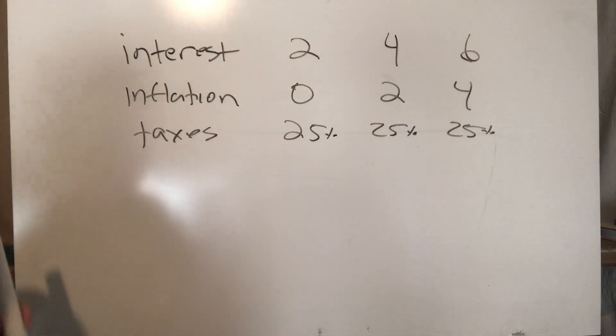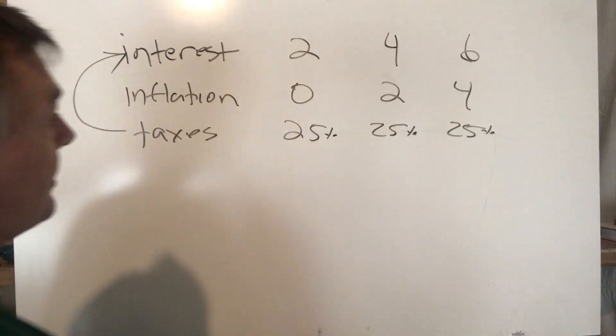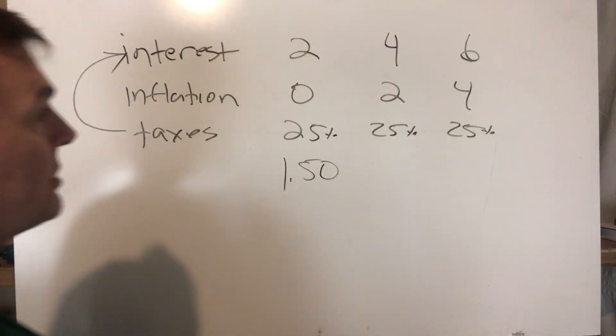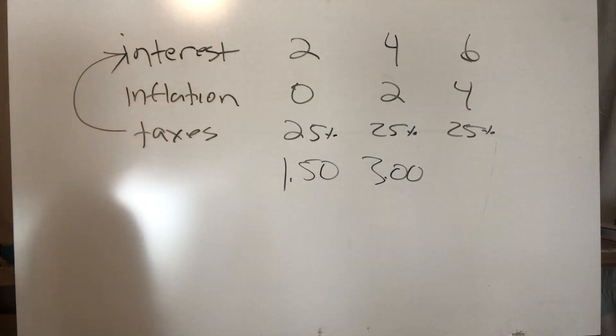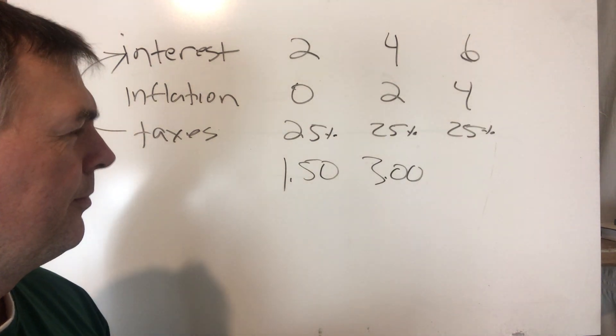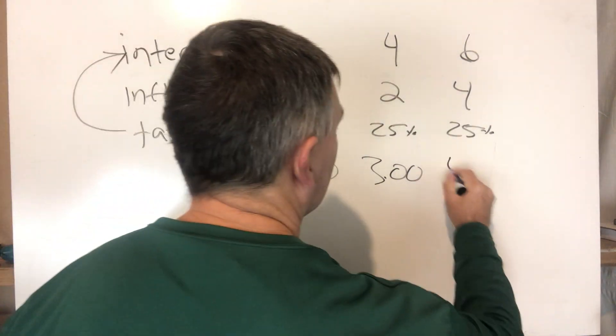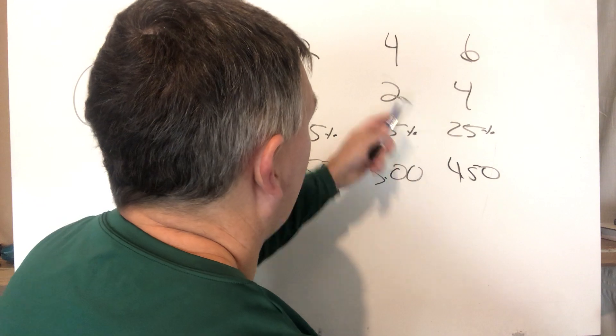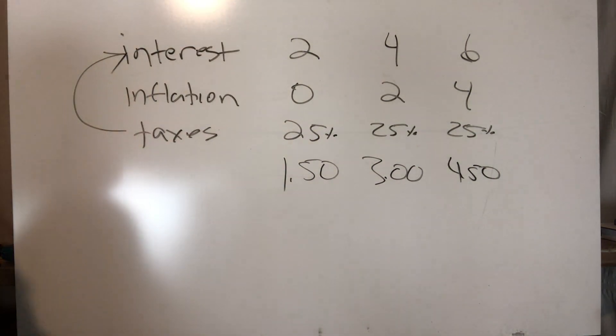What happens is you don't pay taxes on the net; you pay taxes on the gross. So here you've got 25% of 2, which is 1.5. Here you've got 25% of 4, which is 3. Here you've got 25% of 6—let me get my calculator—6 minus 25% is 4.5.